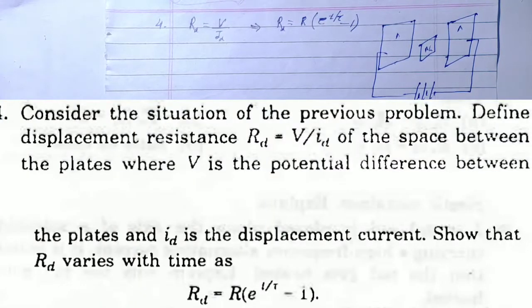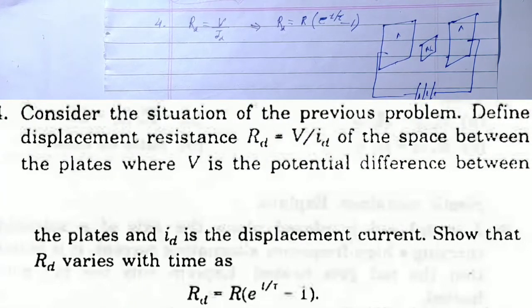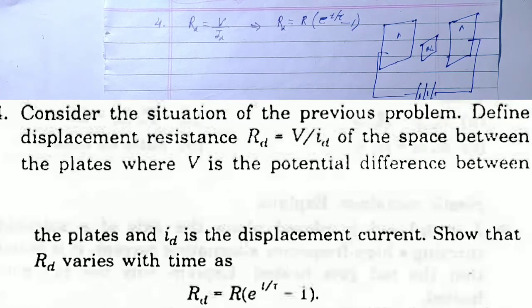SC Vima solution, Chapter 40, Electromagnetic Wave, Question Number 4. Consider the situation of the previous problem. Define the displacement resistance R_d = V/i_d of the space between the plates, where V is the potential difference between the plates and i_d is the displacement current. Show that i_d varies with time.